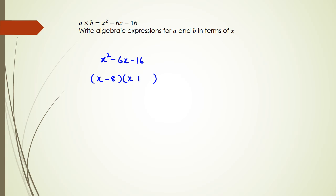When we factorize this, we're looking for two numbers that multiply to minus 16 and add up to minus 6. That's negative 8 and positive 2. So x squared minus 6x minus 16 equals x minus 8 times x plus 2, therefore a equals x minus 8 and b equals x plus 2.